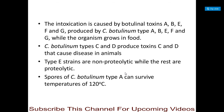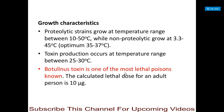Spores of Clostridium botulinum type A can survive temperatures of 120 degrees Celsius, making them highly resistant to high heat. Proteolytic strains grow at a temperature range of 10 to 50 degrees Celsius, whereas non-proteolytic strains grow at 3.3 to 45 degrees Celsius. The optimum temperature for this bacteria is 35 to 37 degrees Celsius. Toxin production occurs at a temperature range of 25 to 30 degrees Celsius.